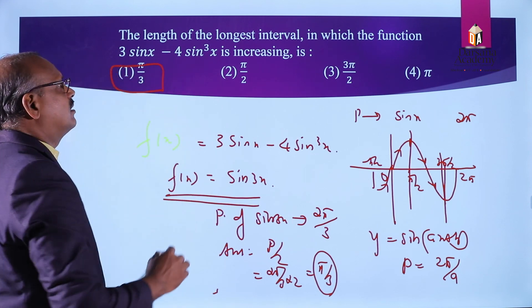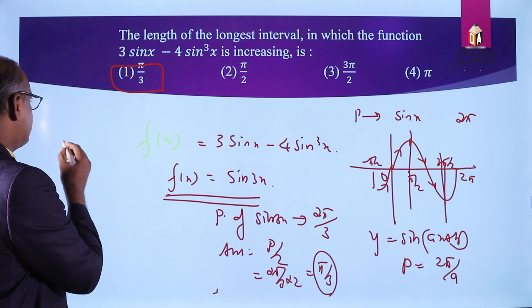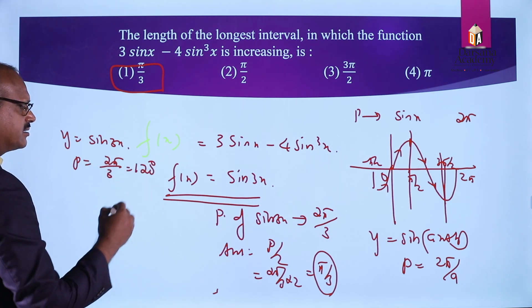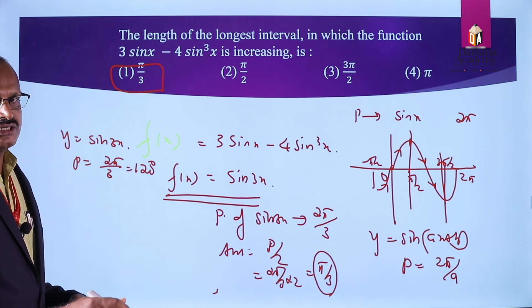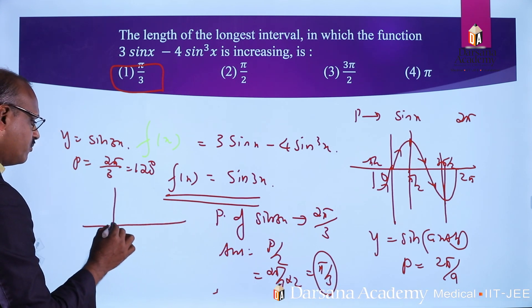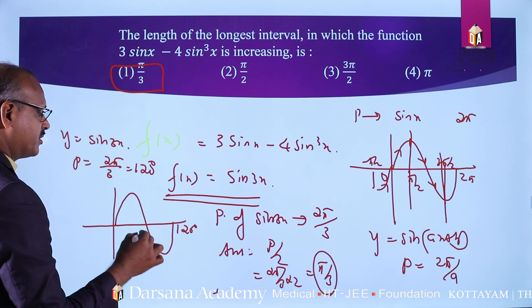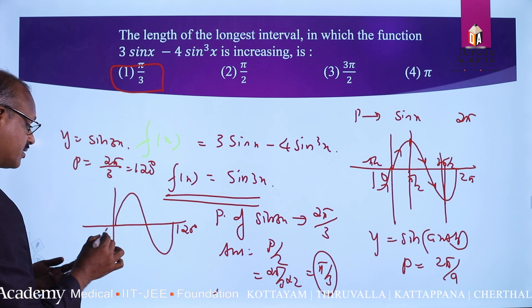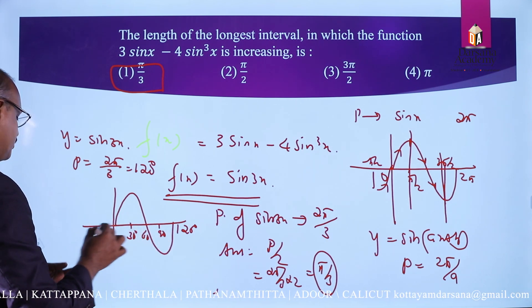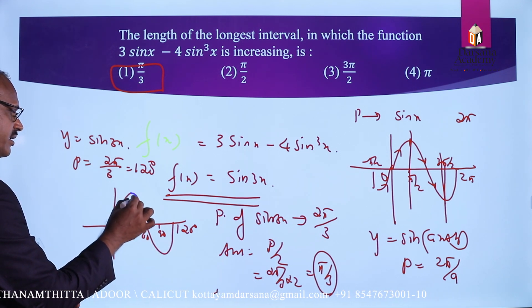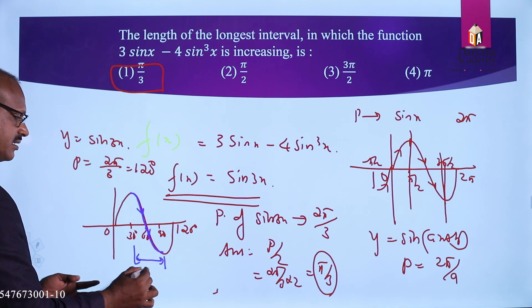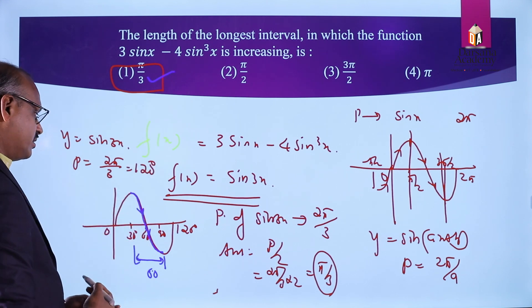That is the first option. Now for the graphical structure: y = sin3x has a period of 2π/3, equal to 120 degrees. Within 120 degrees, we can see the curve. The midpoint is at 60 degrees, with 30 degrees here and 90 degrees here — showing continuously increasing and then continuously decreasing sections.